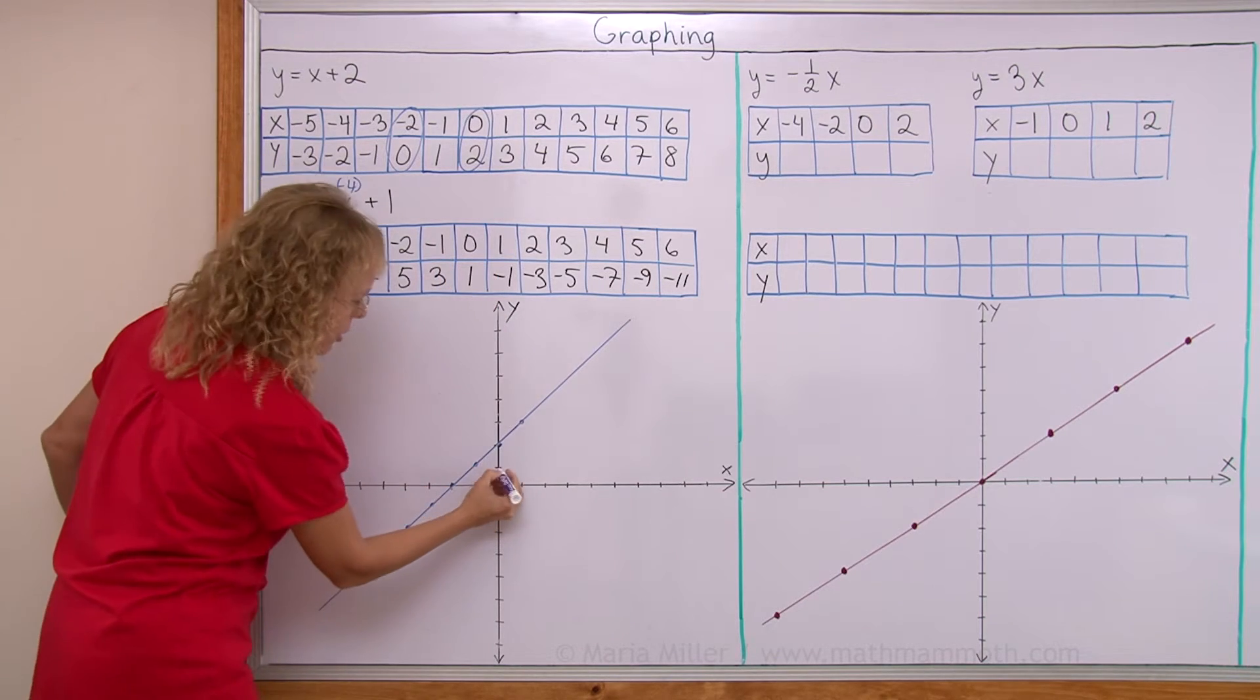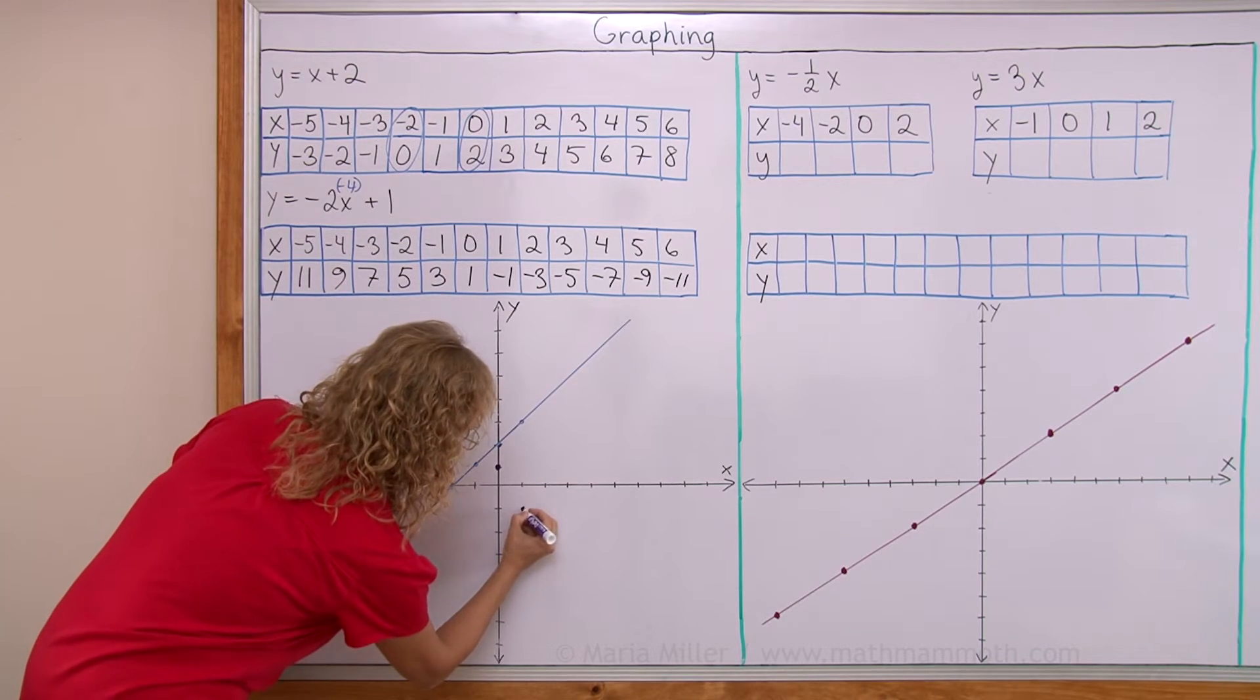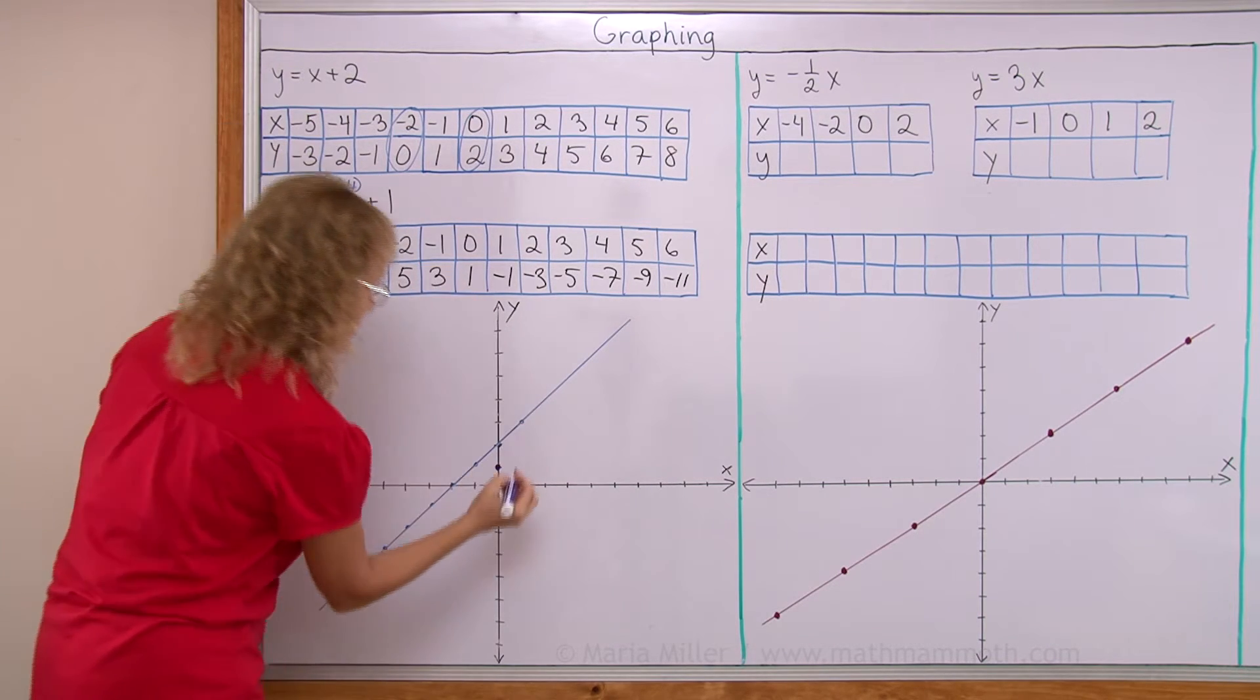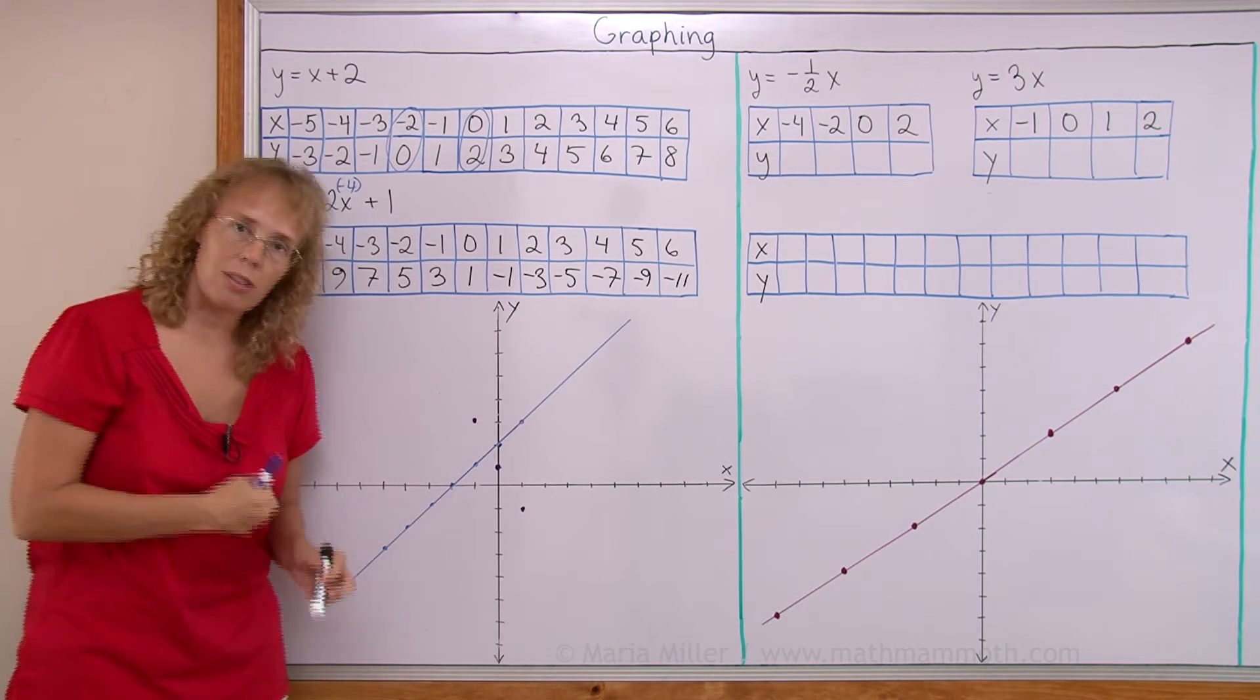0, 1 is an easy point to plot. Then 1, negative 1. Then here, negative 1, 3. That's enough for plotting. I'll just draw the line now.